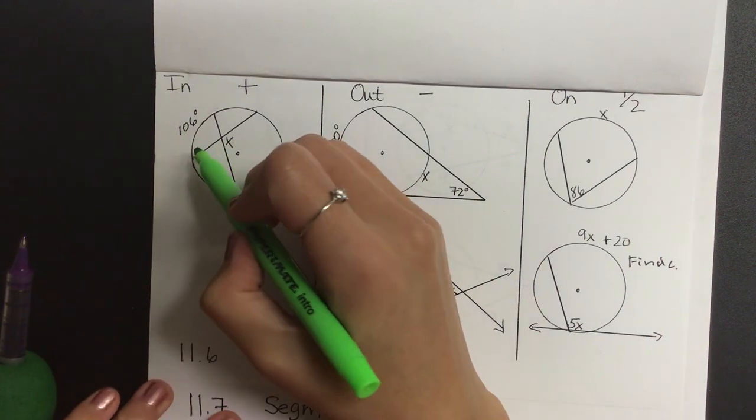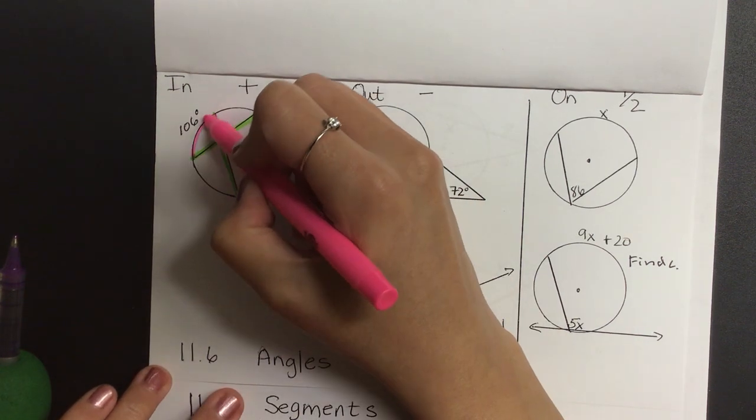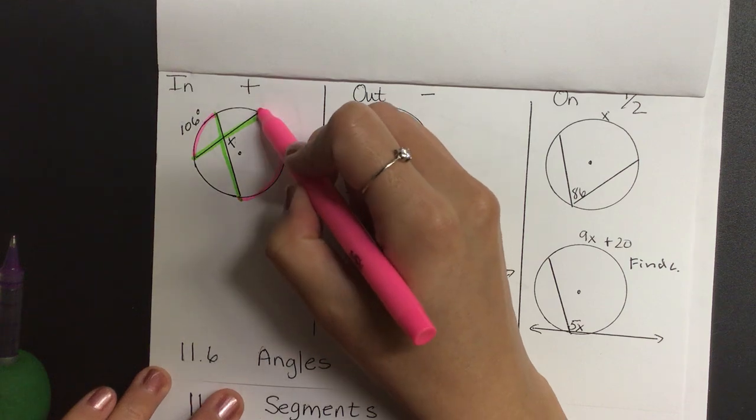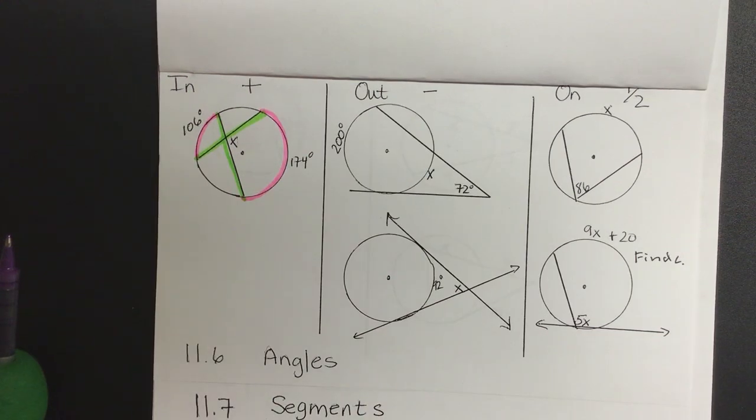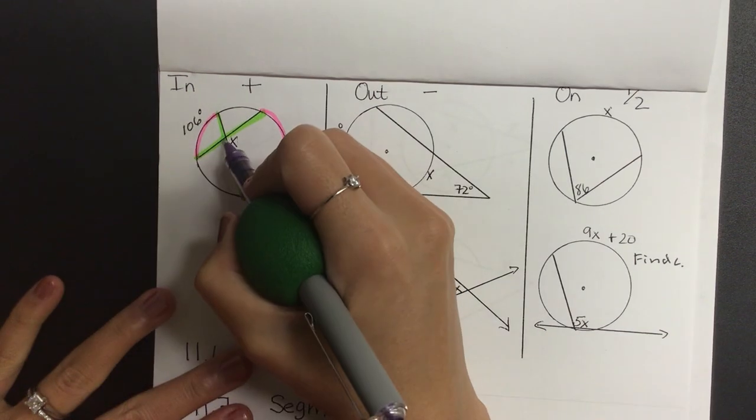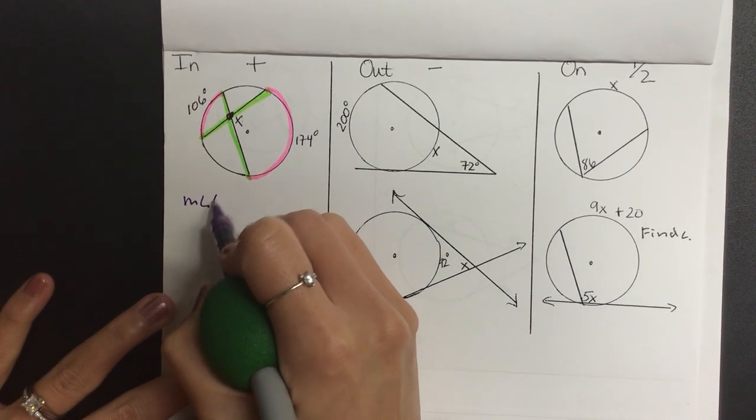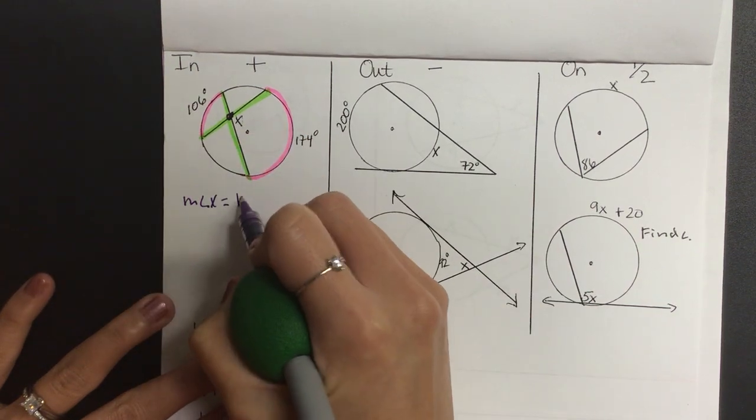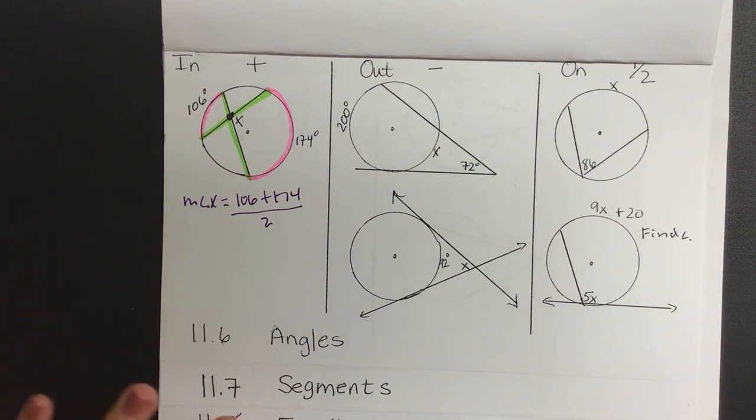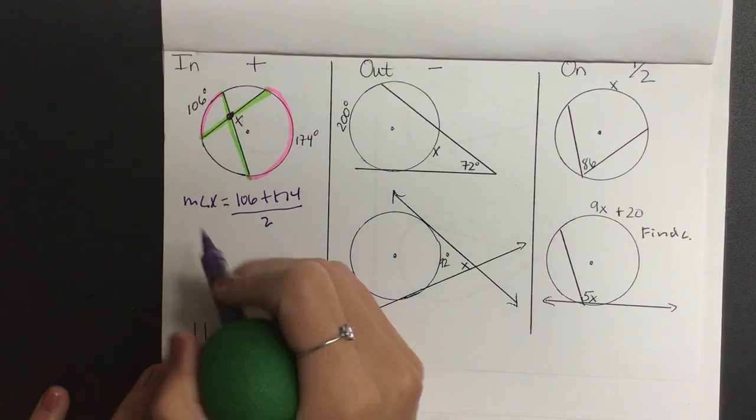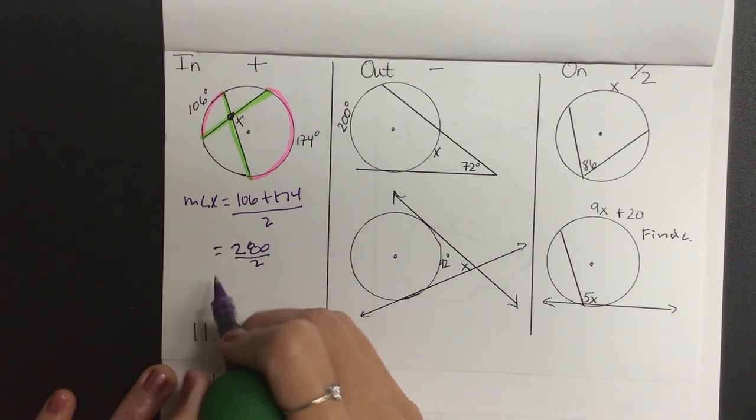Okay, do we all see that? All right, so let's go ahead and use our same highlighter on the first one and do an actual example. The intercepted arc is going to be these two. It's not the other one because this x is on the right side, so I need that piece and then the opposite. So because it's in the inside, are we going to add, subtract, or half it? Add. So we have measure of the angle x is equal to: we have 106 plus 174 divided by two. Can we do 106 and 174 in our head? 280. And what is 280 divided by two? 140.